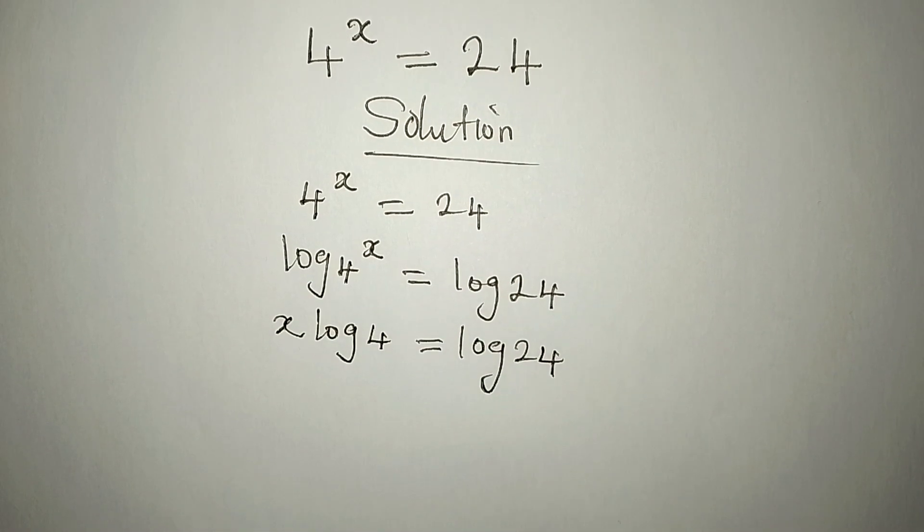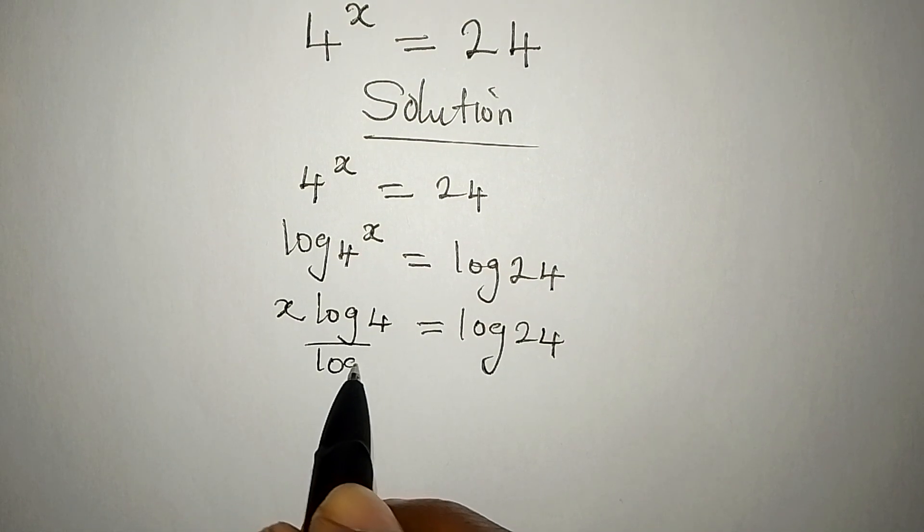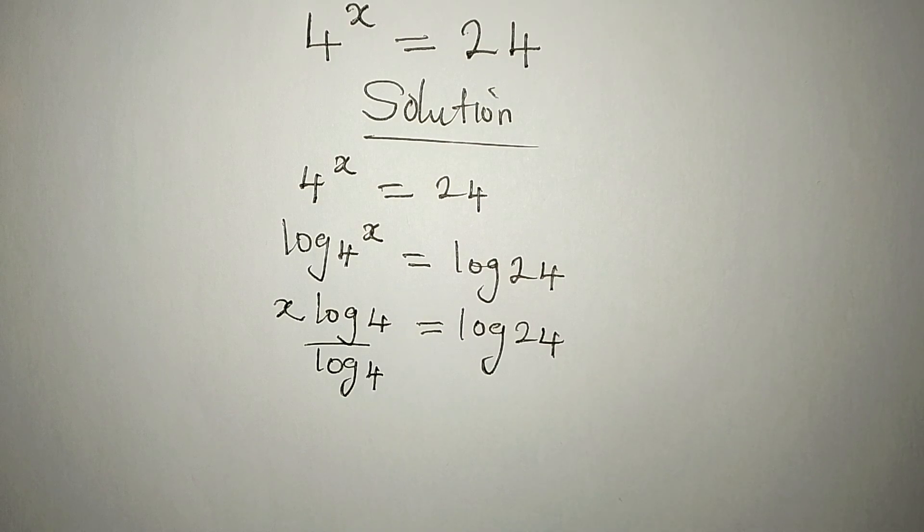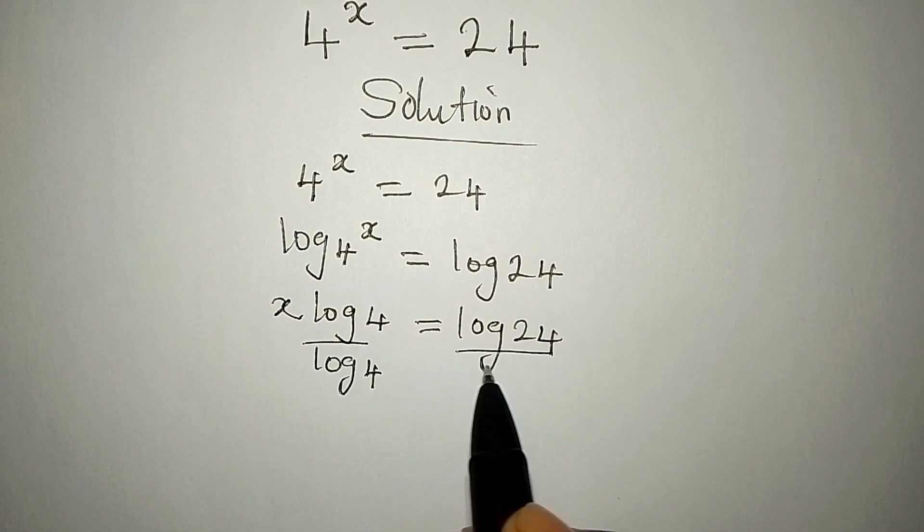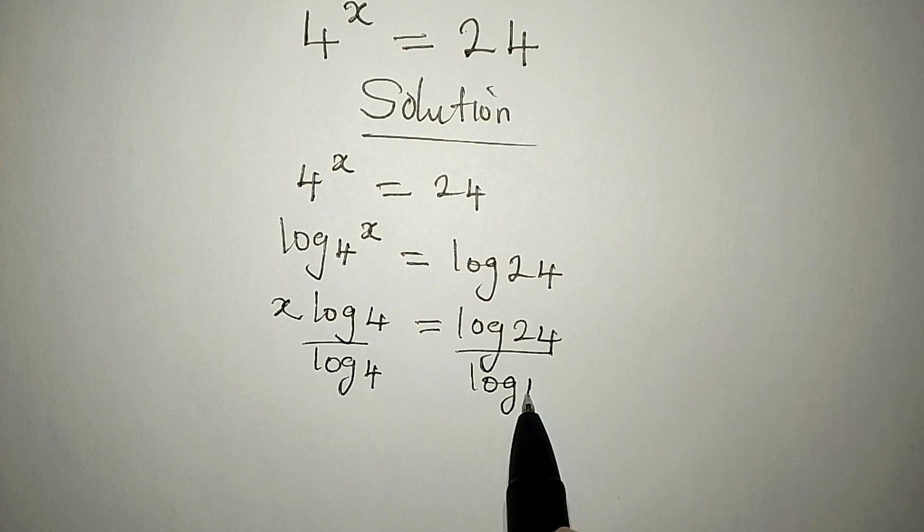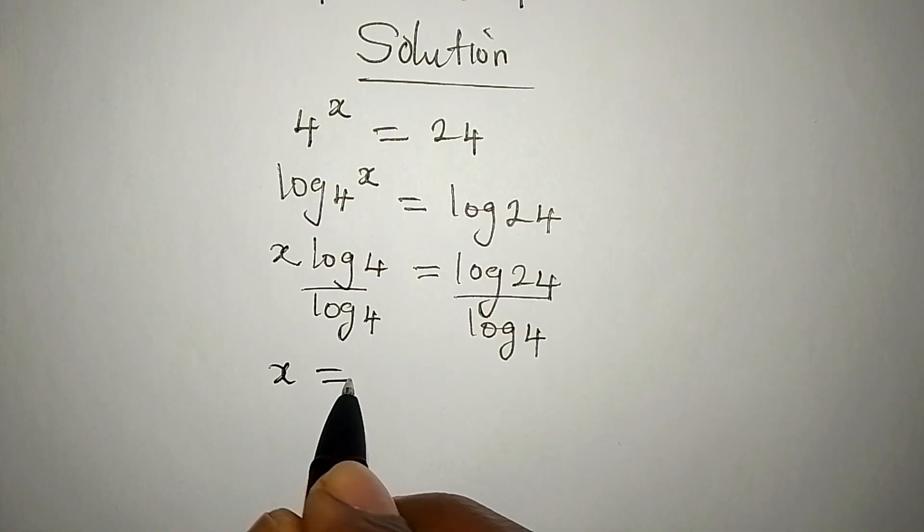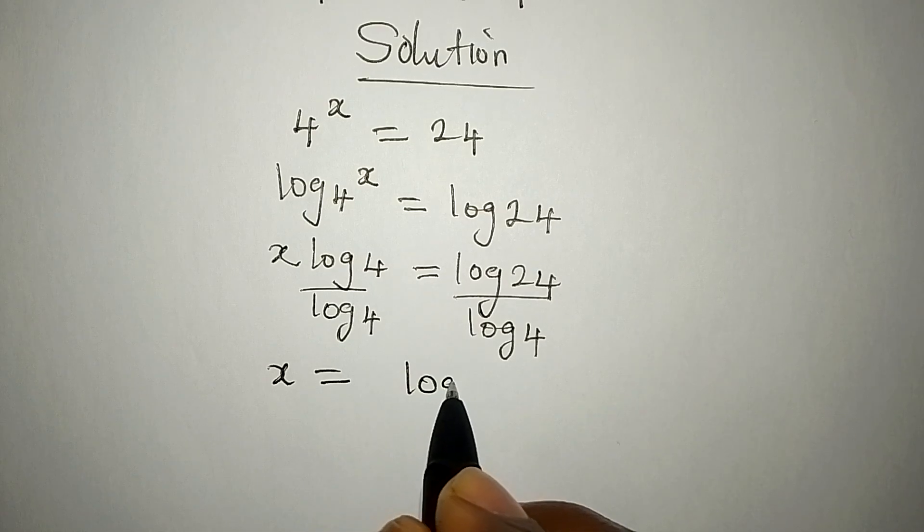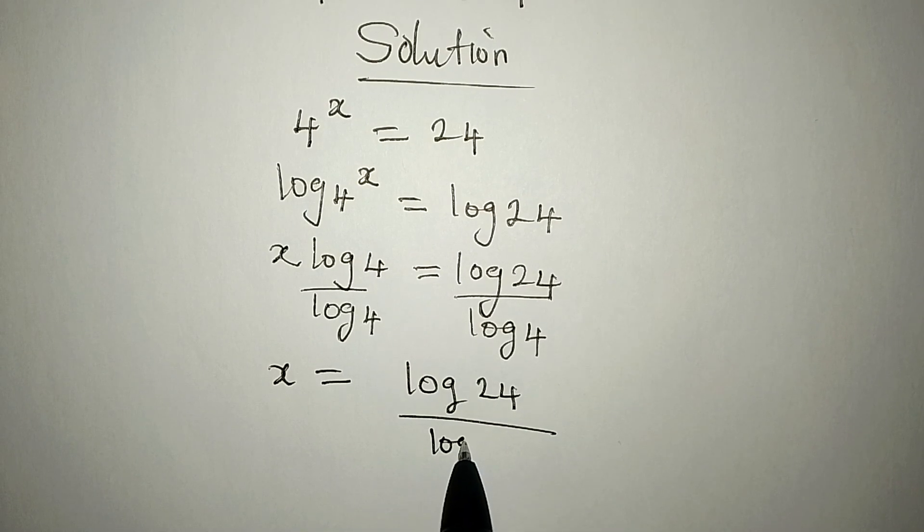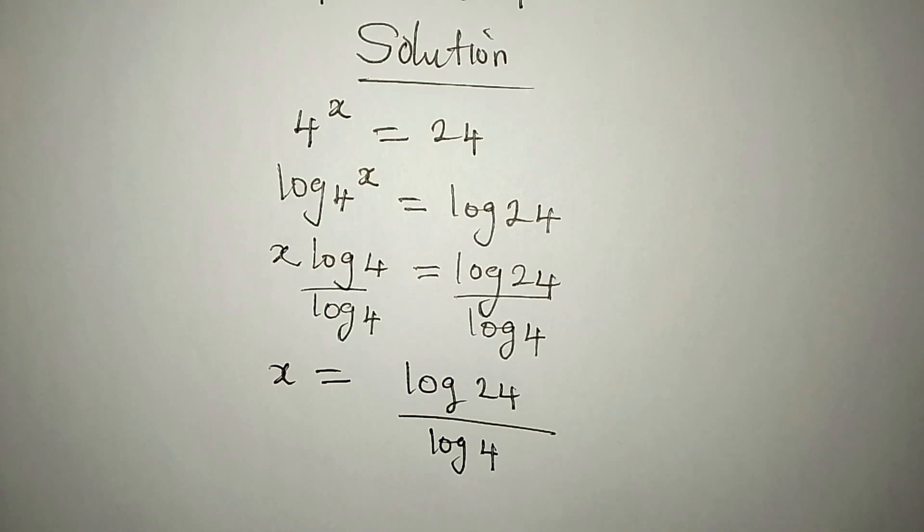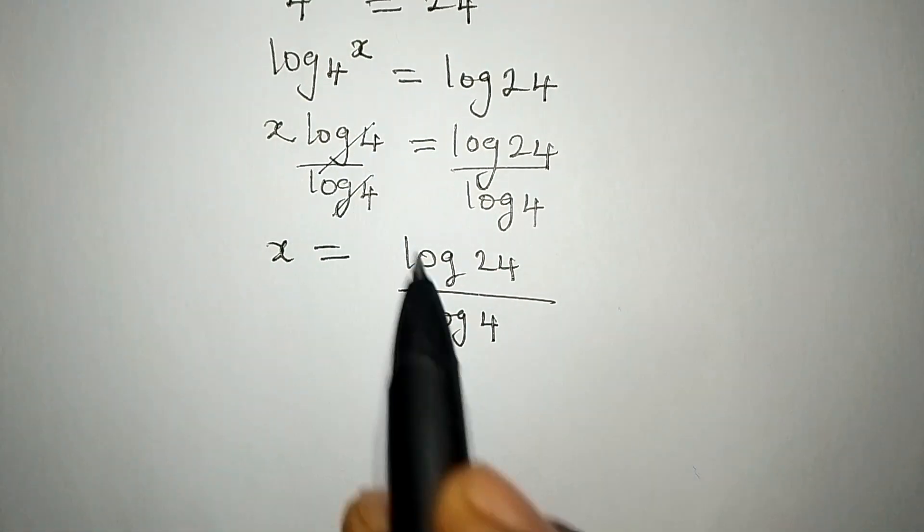From here now, we can divide both sides by log 4. This is because we are looking for the value of x. So, we divide this by log 4 as well. And our x is going to be log 24 over log 4. This is because this and this can cancel.